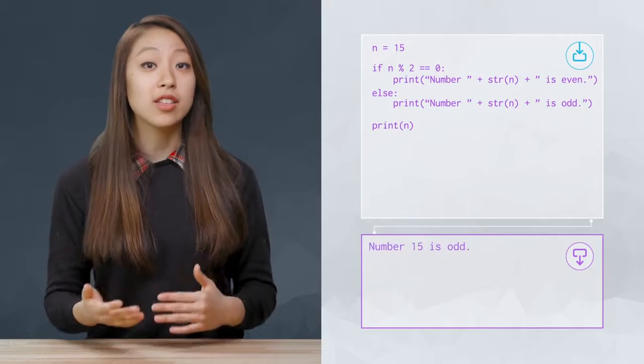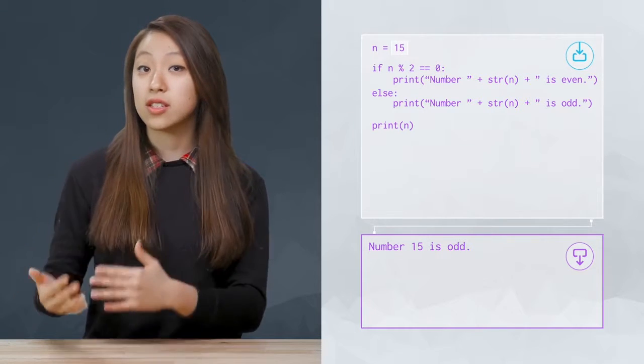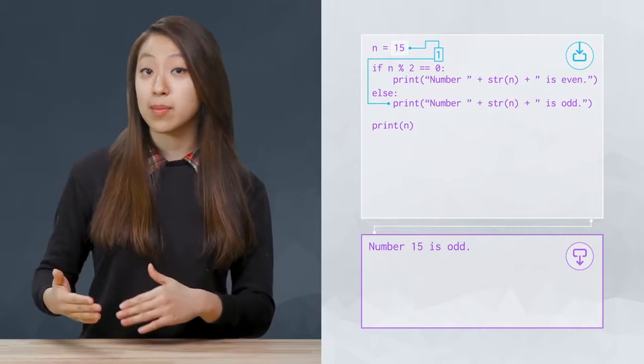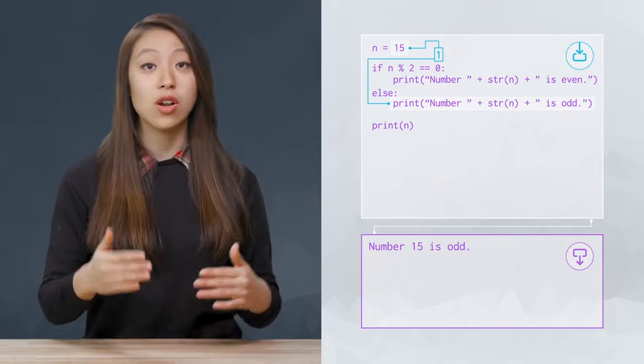Alternatively, if we set n to be 15, this condition would evaluate to false. So, we would skip this block and execute the code under the else.